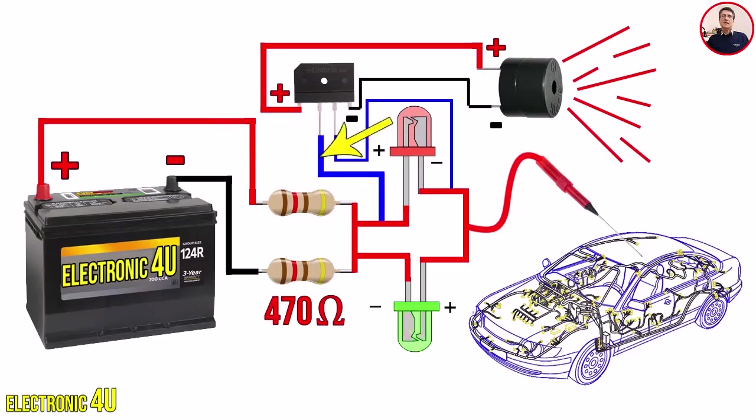Also, the buzzer has a positive and negative input. So, we connect the positive of the diode bridge to the positive input pin of the buzzer. The negative output of the diode bridge is also connected to the negative input pin of the buzzer. The buzzer voltage is better to be 3V. But, I use a 5V buzzer here.